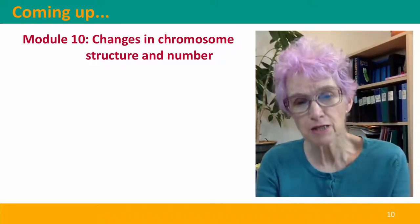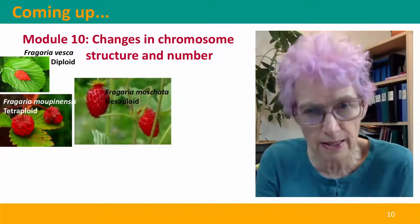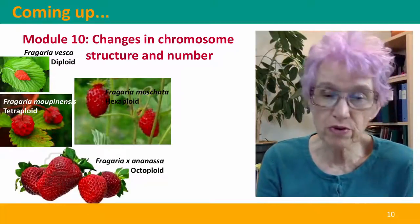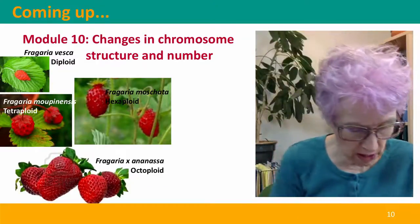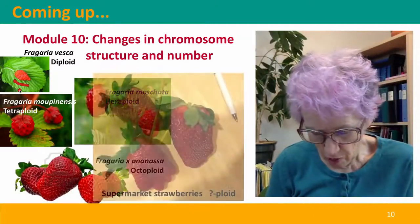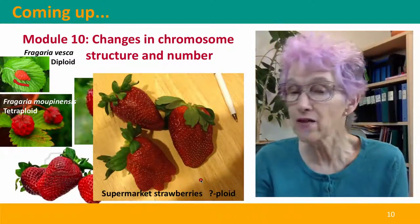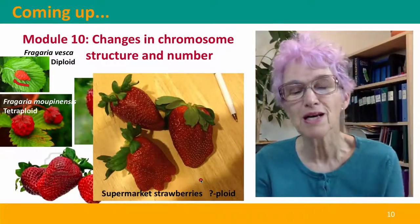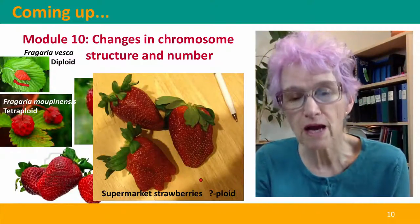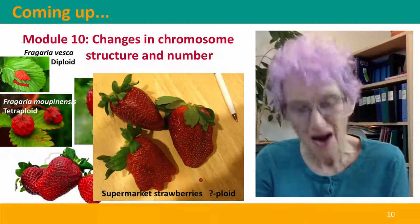Coming up next is Module 10, where we're going to talk about changes in chromosome structure and number — my favorite example being the breeding of strawberries from tiny little wild wood strawberries to the monster strawberries we see in the supermarket today. That's due to changes primarily in chromosome number: big strawberries have more copies of their chromosomes than little strawberries. I hope to see you there.